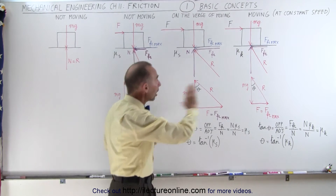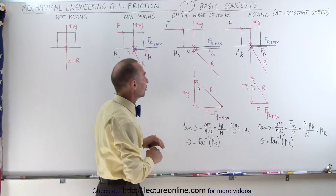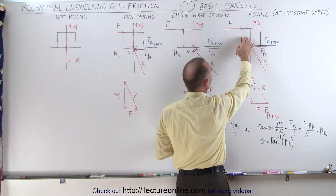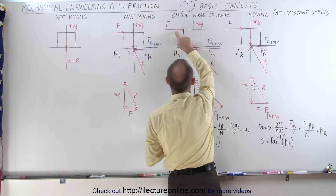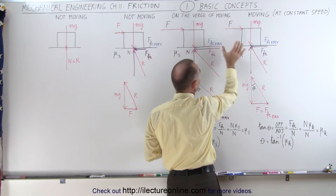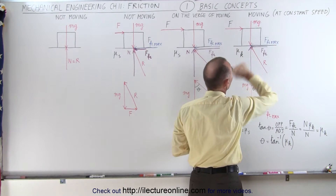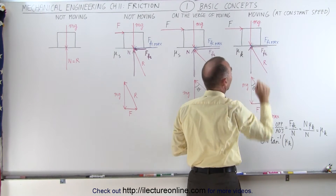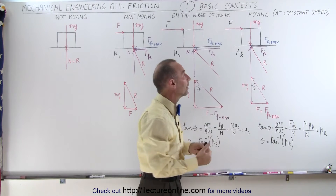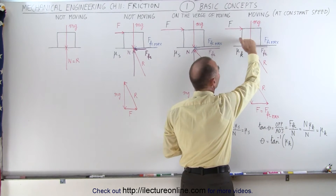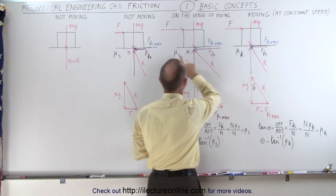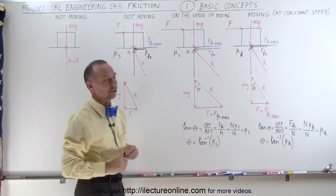Any additional force will cause the block to overcome the force of friction. In the final case, the force is less than in the third case, but the block is already moving at a constant speed, which means the applied horizontal force equals the maximum kinetic friction force between the block and the surface. In the third case it is still static friction.